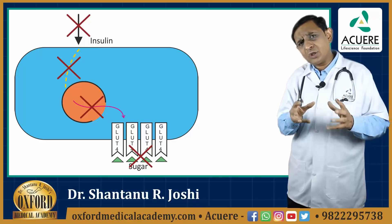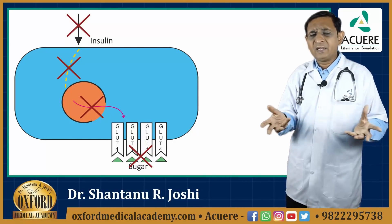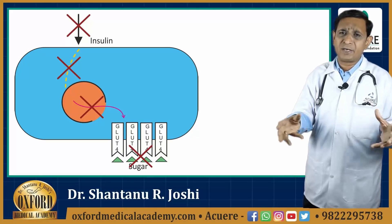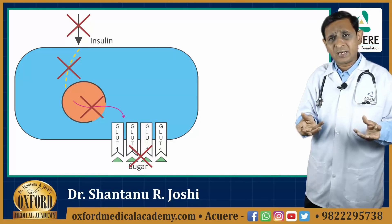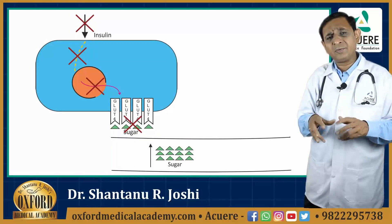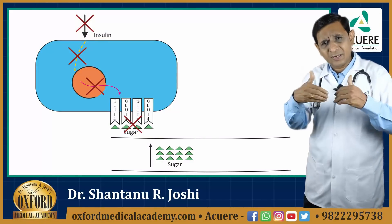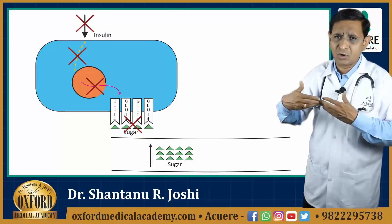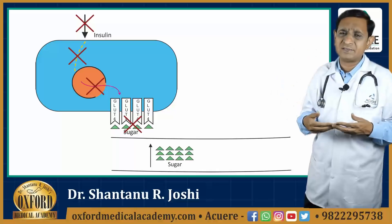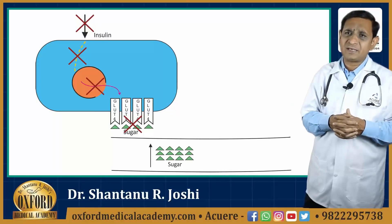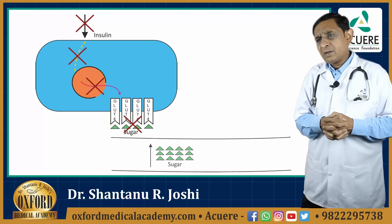If insulin is not available, then GLUT4 receptors will not be recruited, and the sugar will not enter the cell. When sugar is not going into the cell, the blood levels of sugar will rise, and when blood sugar levels rise, we say that the patient is having diabetes.